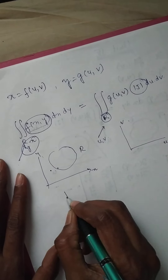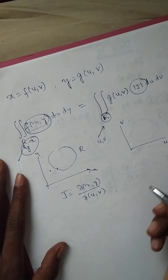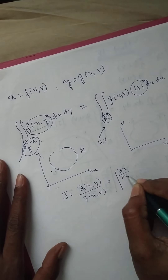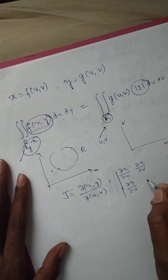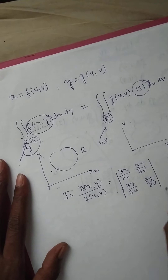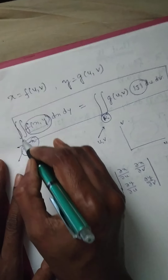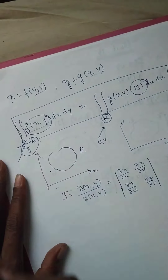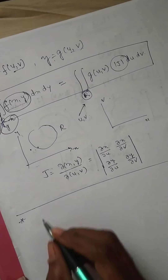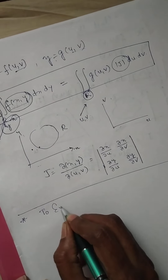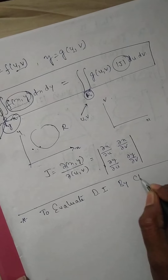J is the Jacobian of xy with respect to u and v. We have seen this is: ∂x/∂u, ∂x/∂v, ∂y/∂u, ∂y/∂v. Theoretically, we are changing xy to new variables u and v. As a particular case, we are going to evaluate double integrals by changing to polar coordinates.